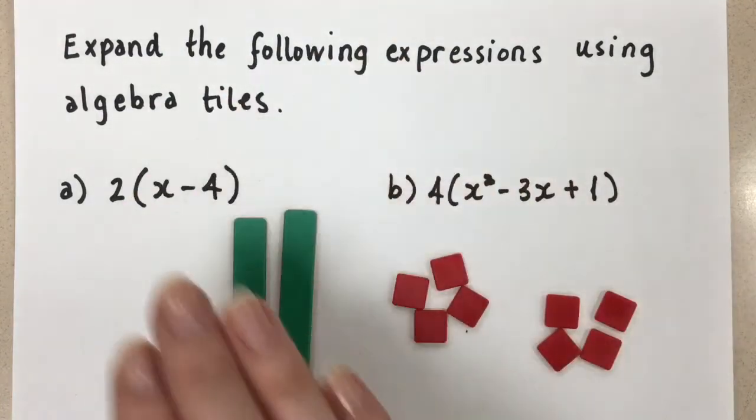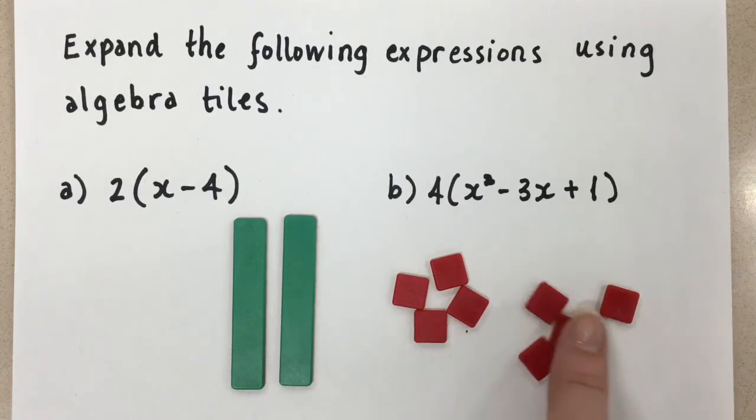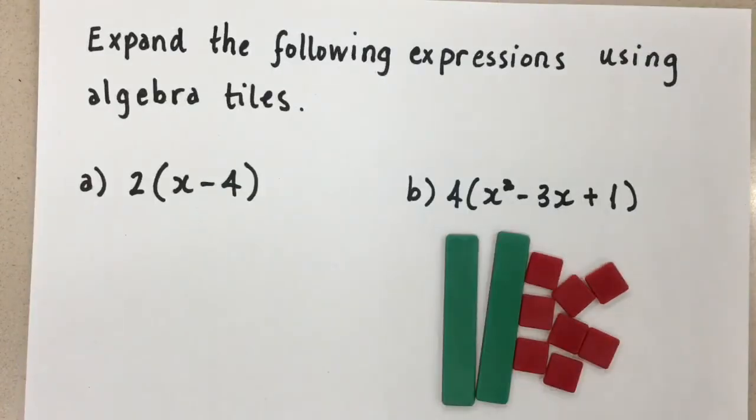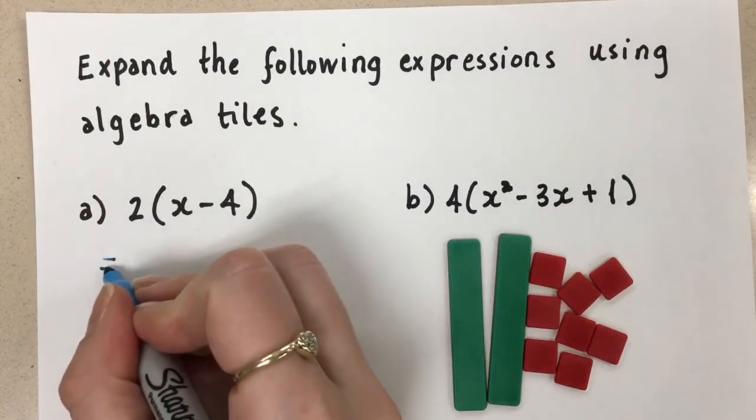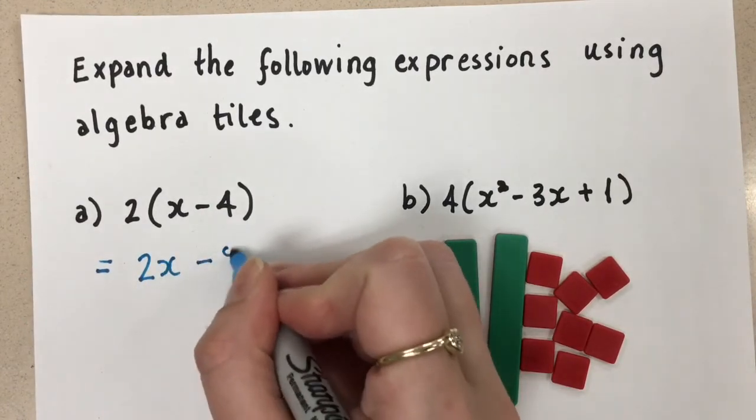So this is 2 times negative 4. And if we look at the big picture now, everything all together, we have 2x, they're positive, and we have minus 8 altogether. So the answer to this is going to be 2x minus 8.